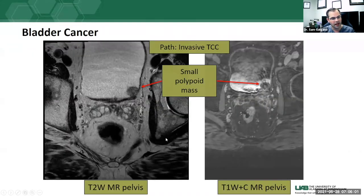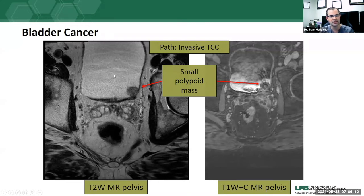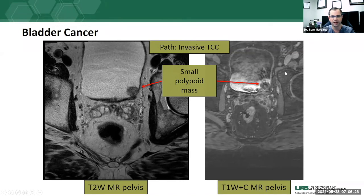On MRI, a T2-weighted image of the pelvis naturally provides contrast with the bladder since urine is T2 bright. We can see small polypoid masses without needing iodinated contrast. On post-contrast images analogous to the CT urogram, we see filling defects with contrast in the urinary bladder — in this case an invasive transitional cell or urothelial carcinoma.